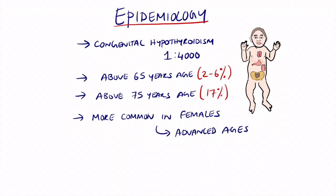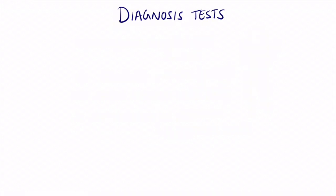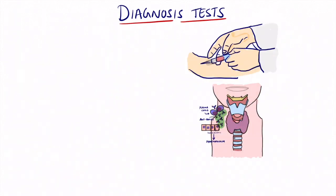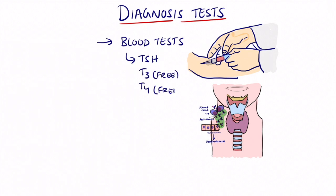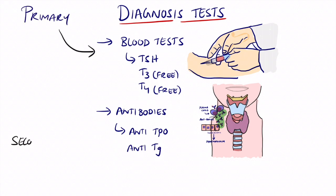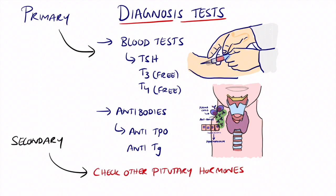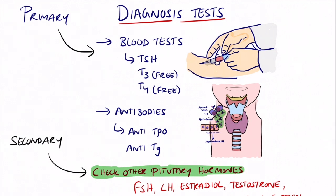For diagnosis, a clinician would usually take a blood test as well as immunoglobulin tests. Blood tests consist of TSH, T3, and T4, from which you can deduce whether it is hypo or hyperthyroidism. The antibodies involved are anti-TPO and anti-TG. For secondary hypothyroidism with a suspected pituitary problem, you will also need to check pituitary hormones such as FSH, LH, estradiol, testosterone, and various other sex hormones.